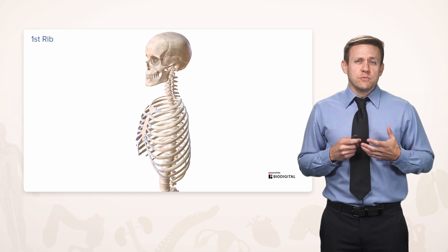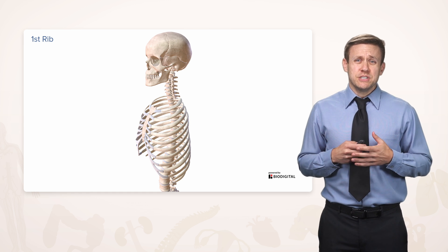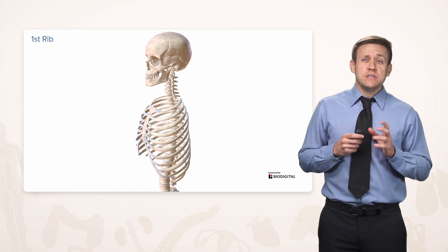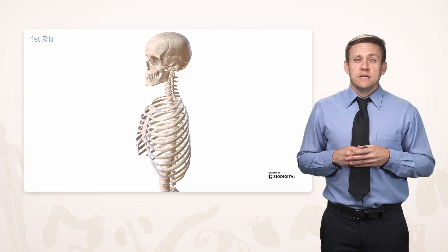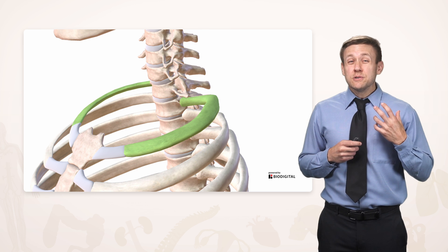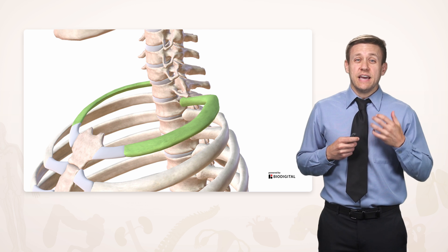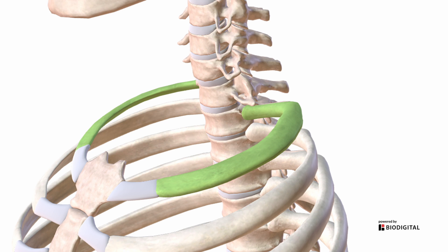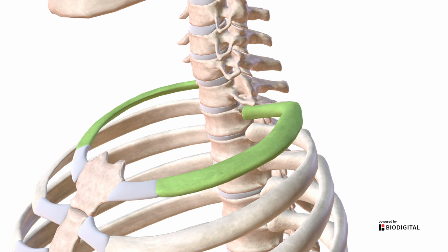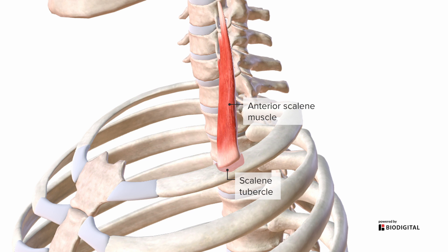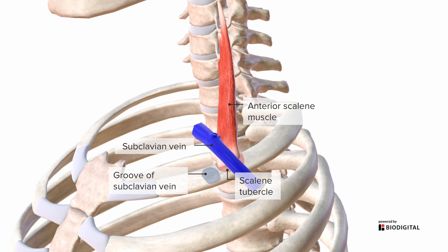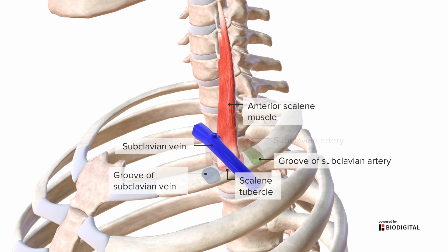For the most part, ribs are similar to each other, but certain ribs have unique features worth pointing out. The first rib is close to the neck, making it an ideal location for neck muscle attachments. There's a little bump called the scalene tubercle on the first rib, where the anterior scalene muscle attaches. Just anterior to that is a groove for the subclavian vein, and posteriorly to that muscle is a groove for the subclavian artery.